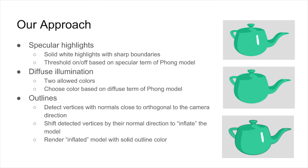We use a three-step process to achieve cell shading. First, we toggle on or off highlights based on the specular term of the Phong model. Second, we choose between two diffuse colors and switch between them based on the diffuse term of the Phong model.